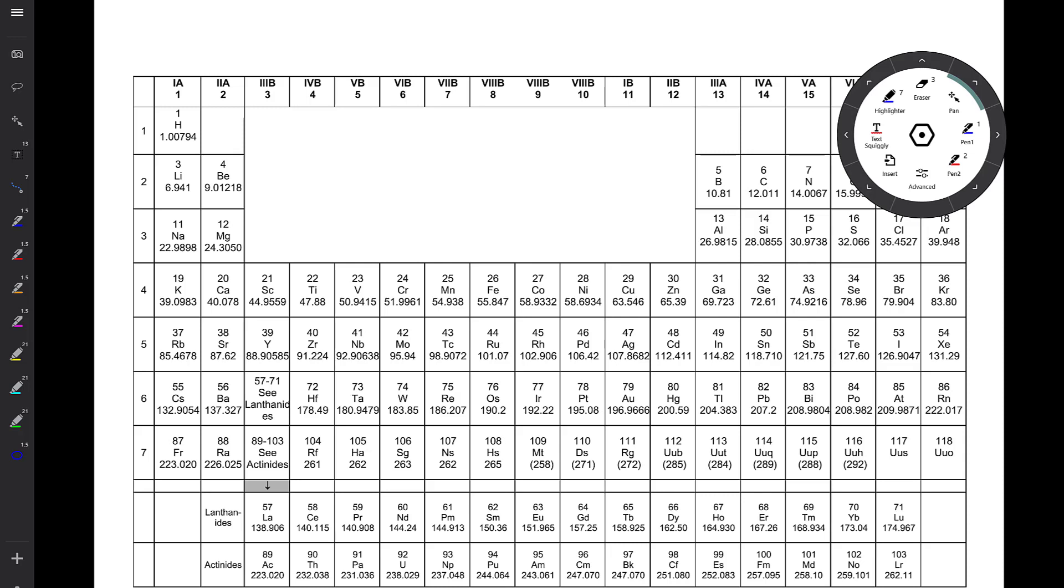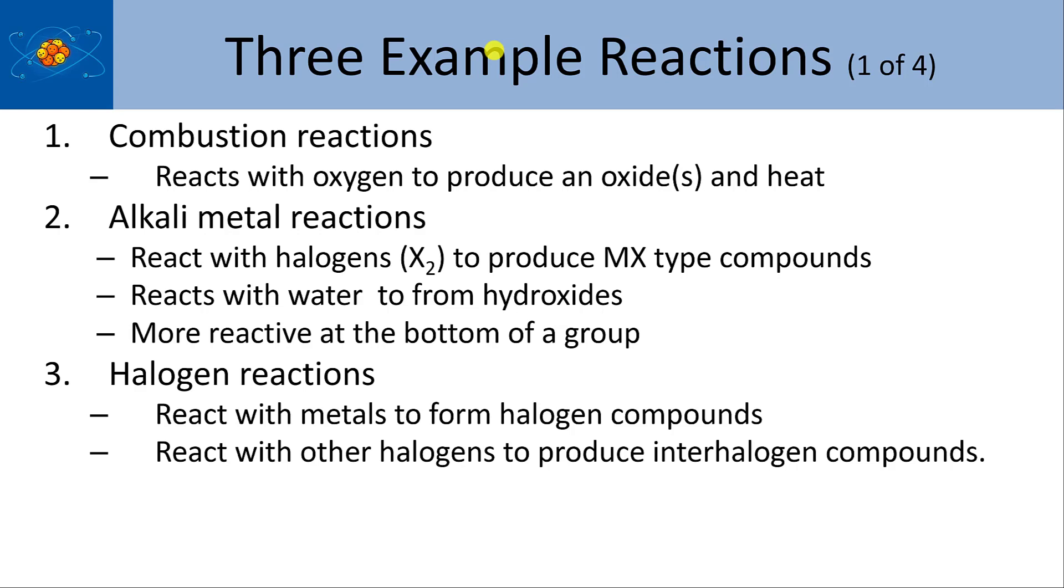When we're talking about that particular group, group 1A or group 1, what happens is when they react with halogens, they tend to form MX-type compounds. So metal and the halogen, and the exact formula is almost always determined just by the charges of the ions.